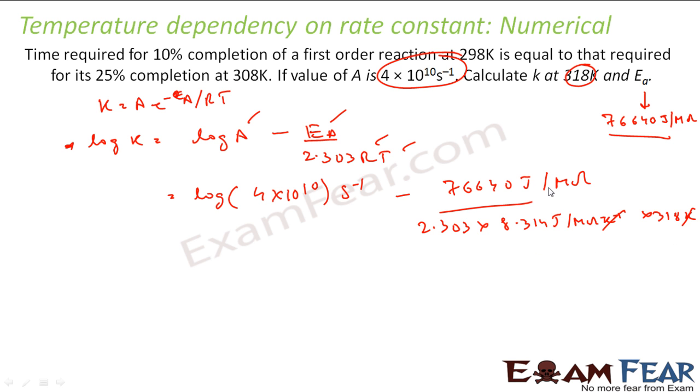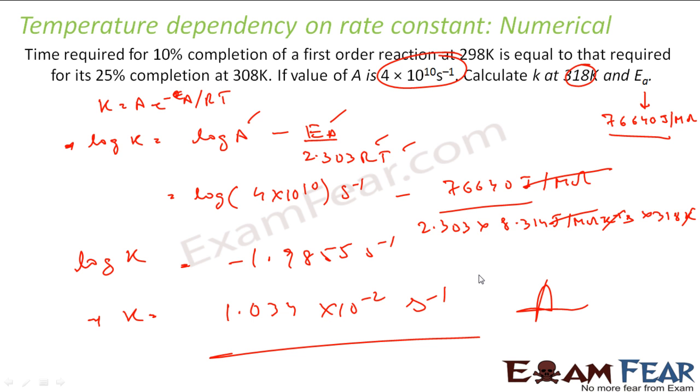When you solve this, everything gets cancelled and what you get is log K equals minus 1.9855 per second. Or K is nothing but 1.034 times 10 to the power minus 2 per second. You can just solve this using anti-log. K is anti-log of minus 1.9855 and you will get the value.